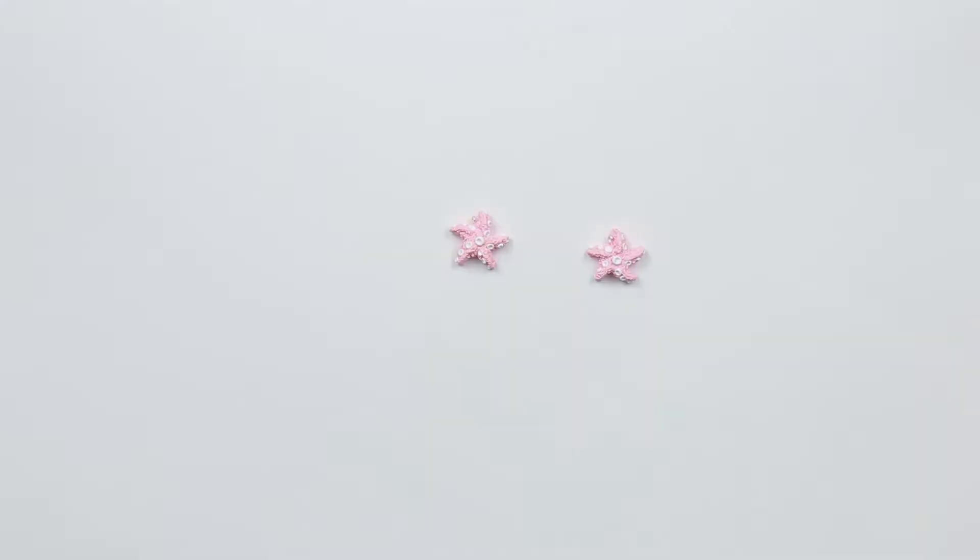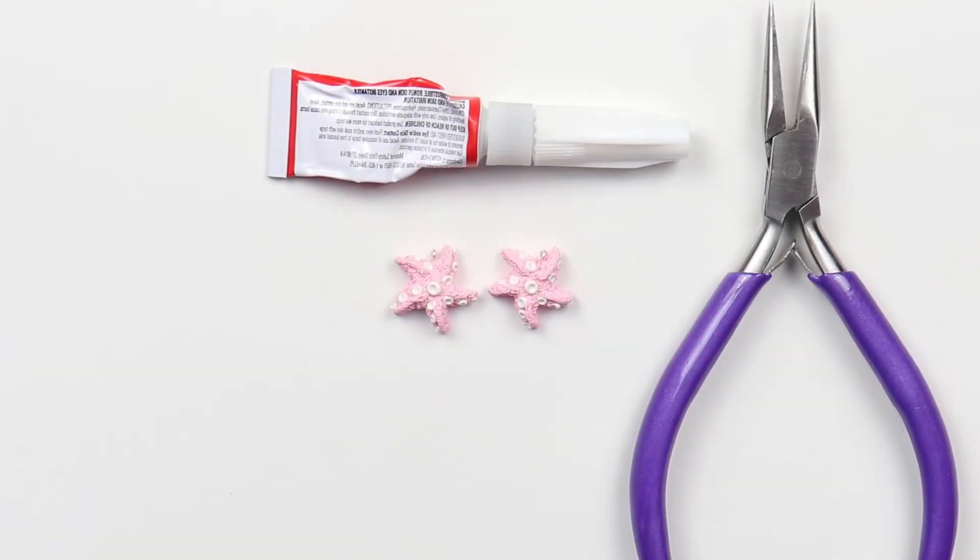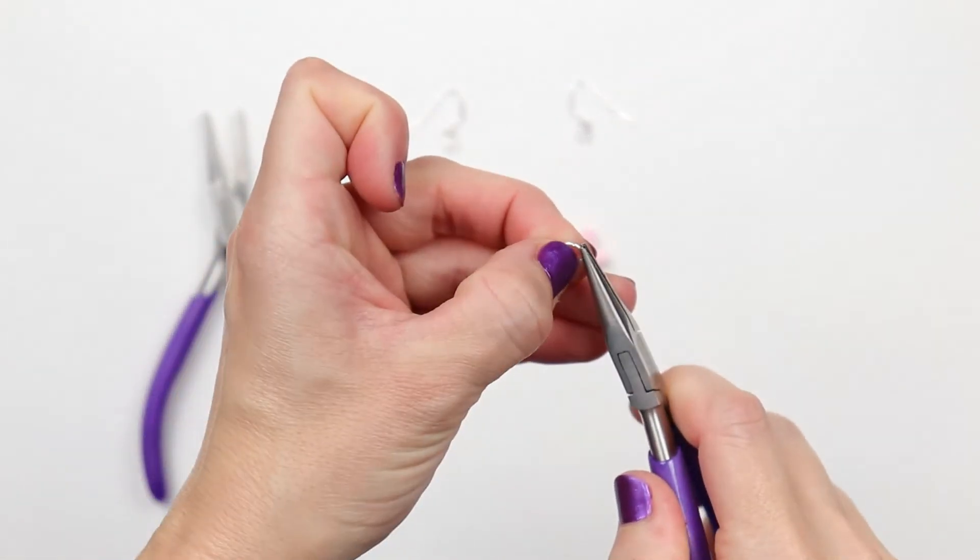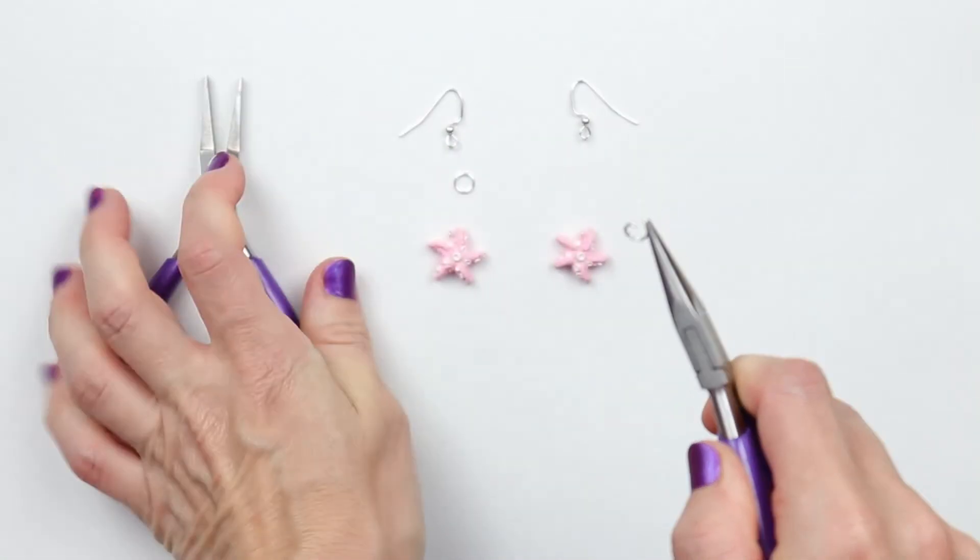Bake and resin. Glue in your eye hooks. To assemble your earrings all you'll need is a jump ring and an earring hook.